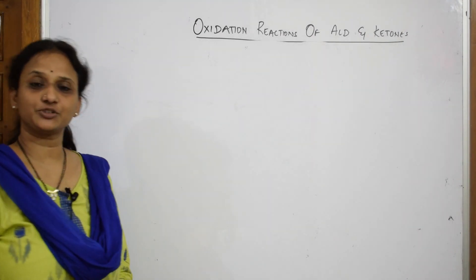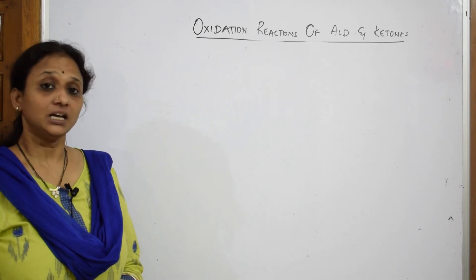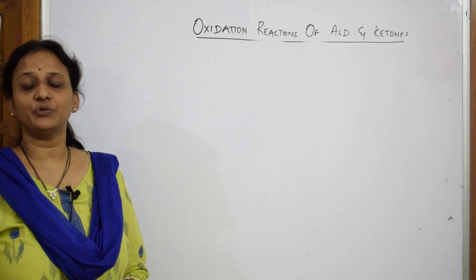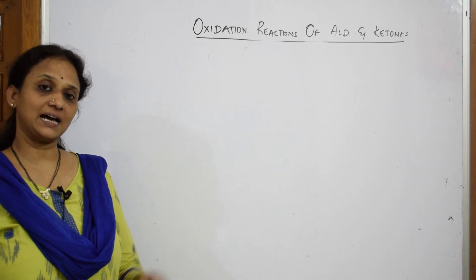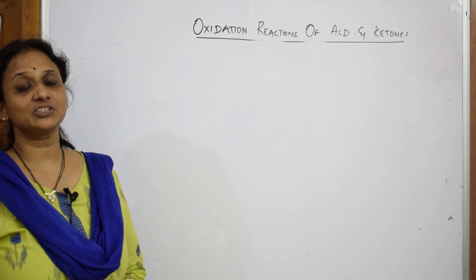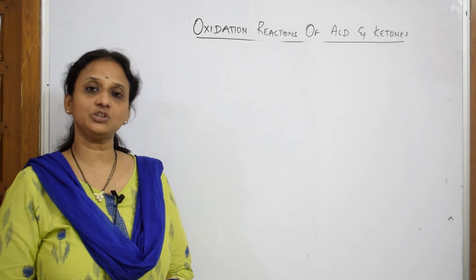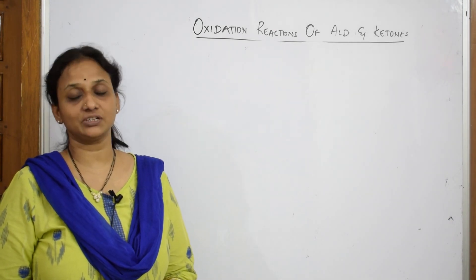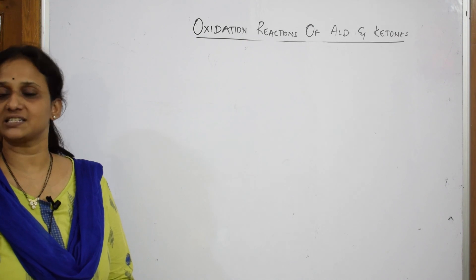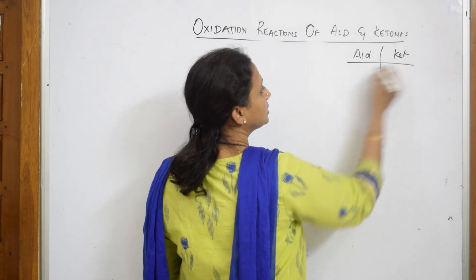Let us come back and do the next oxidation reaction. As I said, with potassium dichromate or KMnO₄ we have seen Pop-off's Rule, where the carbonyl compound comes out with the alkyl group having fewer carbon atoms. Now let us see the Tollens' reagent test and Fehling's solution test. Whenever you need to test whether the functional group is aldehyde or ketone, we perform these reactions. Only aldehydes respond to Tollens' test and Fehling's test — ketones will not respond.